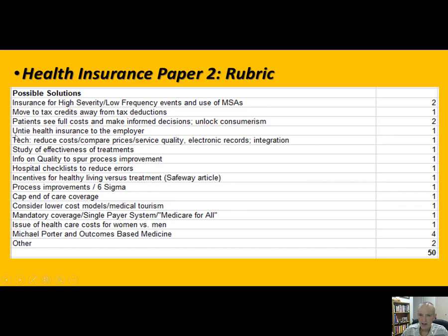We'll talk about how technology can be used to reduce costs, quality initiatives, hospital checklists, ways we can actually reduce costs and improve quality. We'll discuss what Safeway has been doing with process improvements—doctors' offices are incredibly inefficient and waste a lot of money because they're not focused on efficiency. We'll talk about end-of-life care, other models, medical tourism, lower-cost models, nurse practitioners, and I'll give some examples from my own life. We'll also probably have a Zoom session so you can get feedback and discuss.